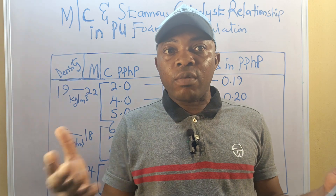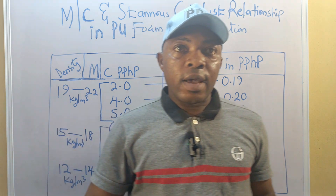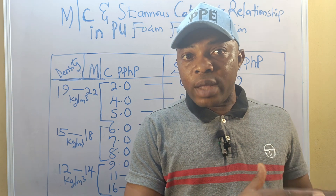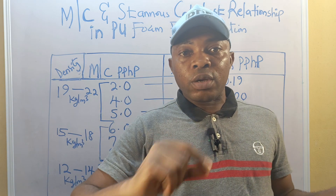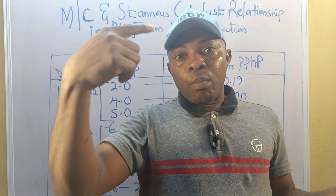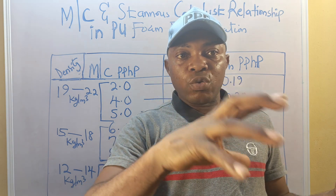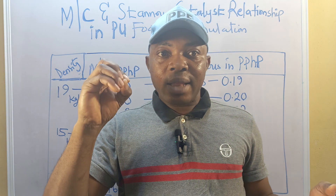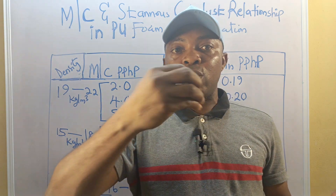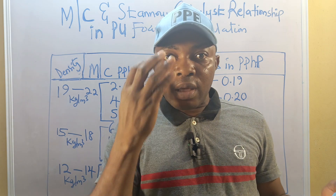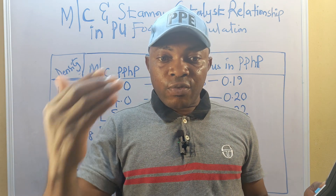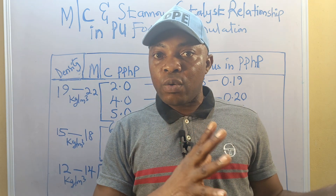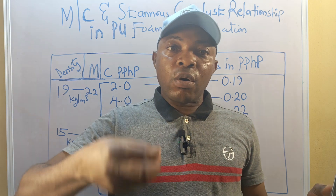The global standard for setting up a PU foam formulation is in parts by weight of polyol. All formulation components depend upon the hundred parts of polyol. But when you are incorporating calcium carbonate, you have to do it by substitution — if you need ten percent calcium, you remove ten parts of polyol and replace it with ten parts of calcium carbonate, so ten plus ninety gives you one hundred. This same principle governs 15, 20, 25, 30 parts, and remember there is a limitation you cannot exceed, so that the physical properties of your foam will not suffer from artificial hardness.